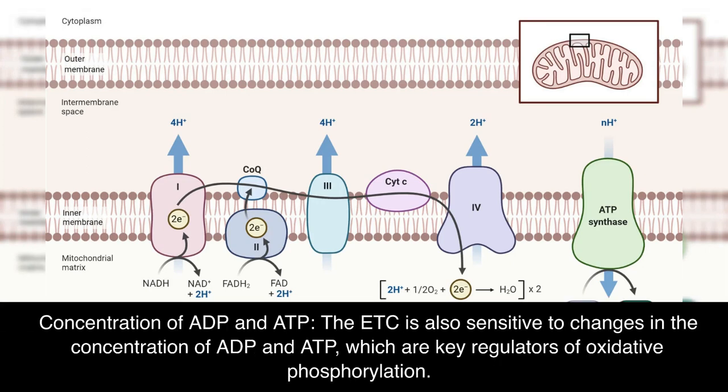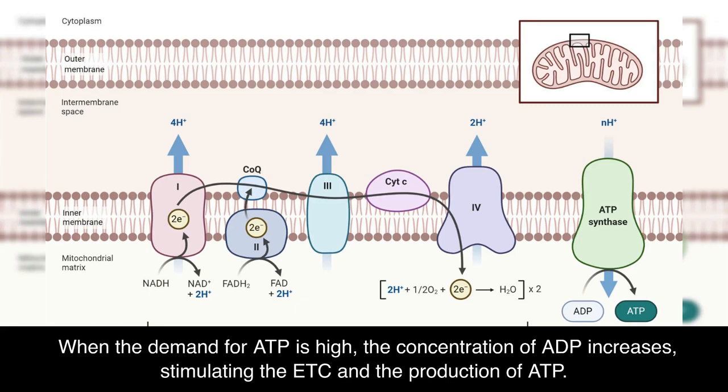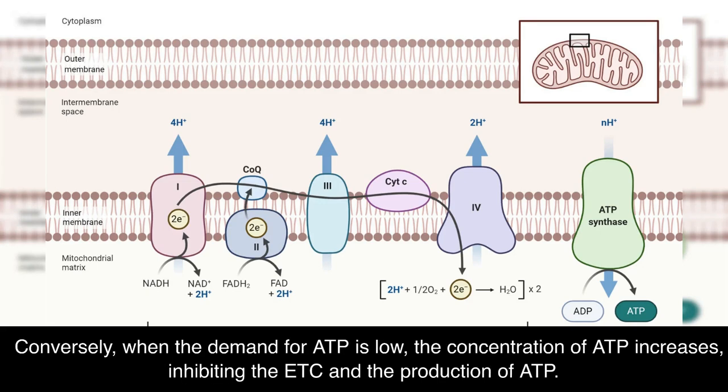Concentration of ADP and ATP: the ETC is also sensitive to changes in the concentration of ADP and ATP, which are key regulators of oxidative phosphorylation. When the demand for ATP is high, the concentration of ADP increases, stimulating the ETC and the production of ATP. Conversely, when the demand for ATP is low, the concentration of ATP increases, inhibiting the ETC and the production of ATP.